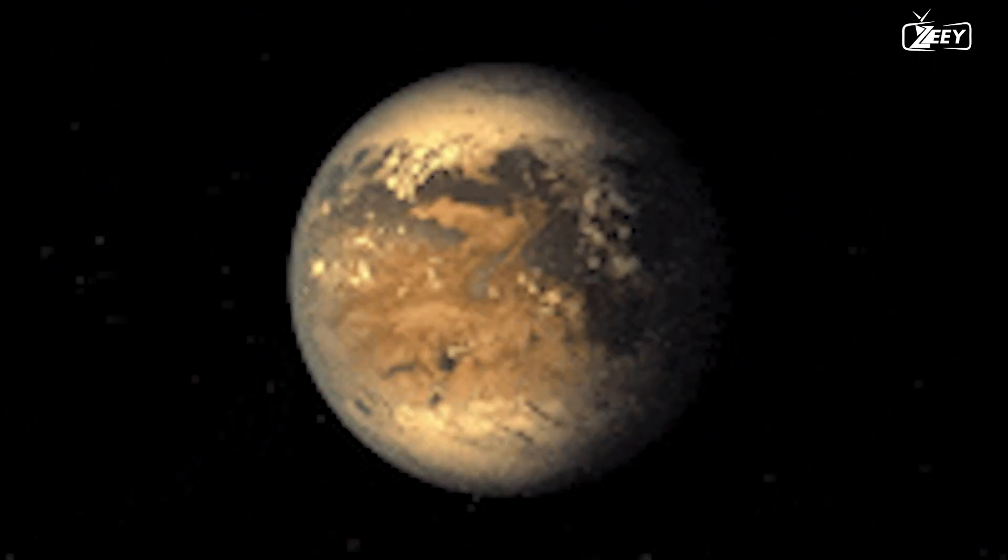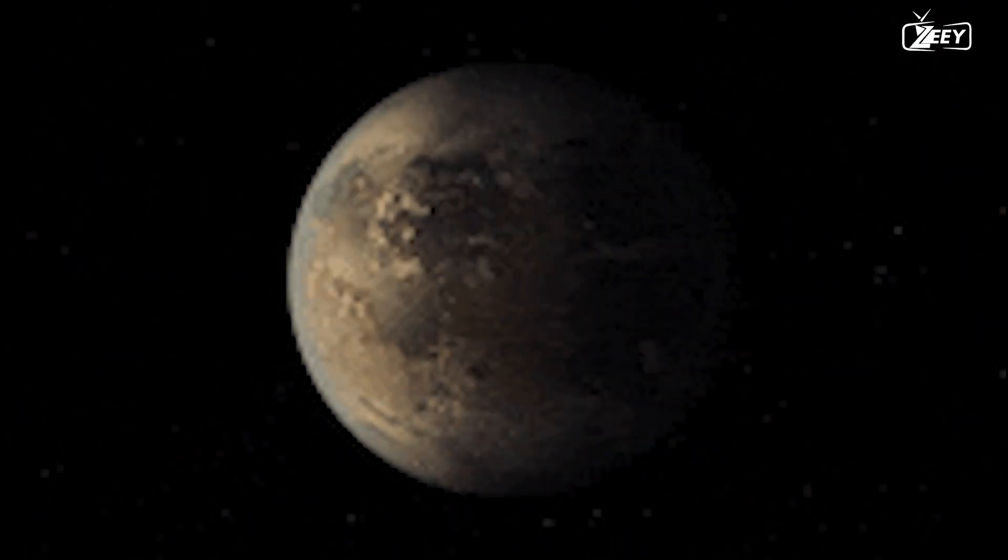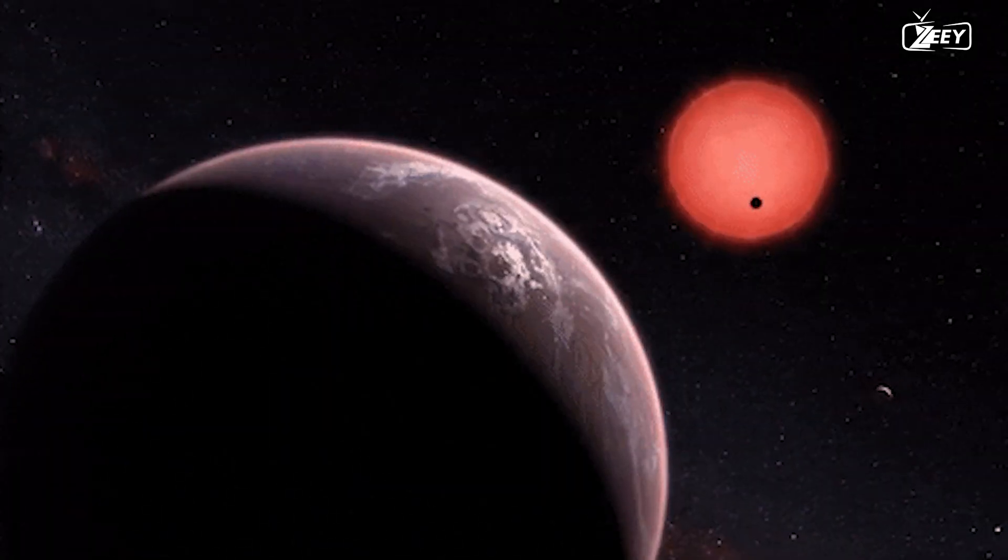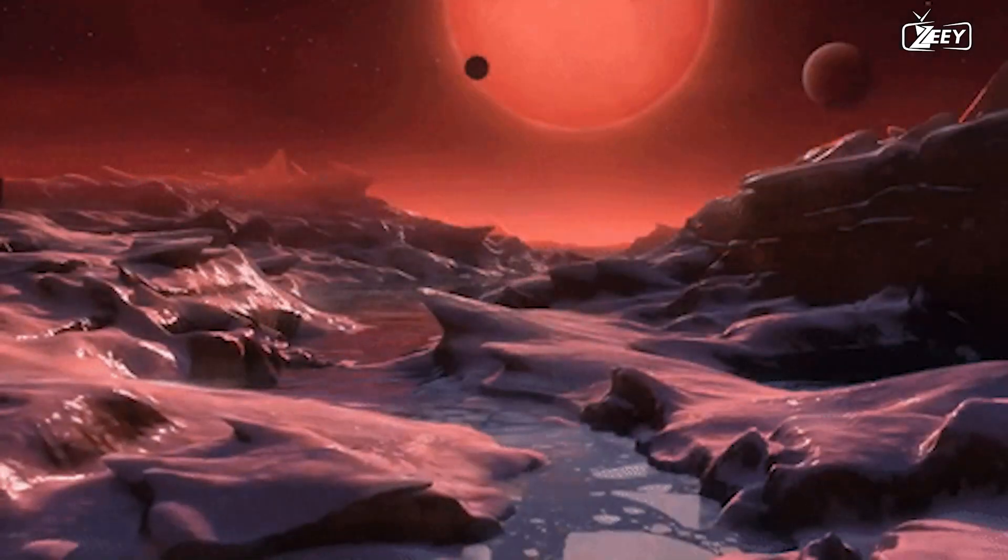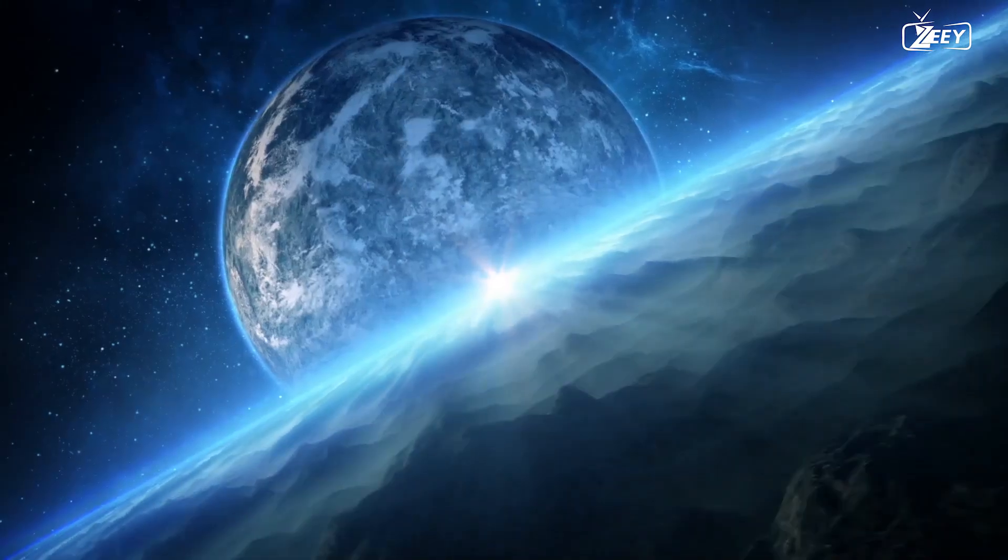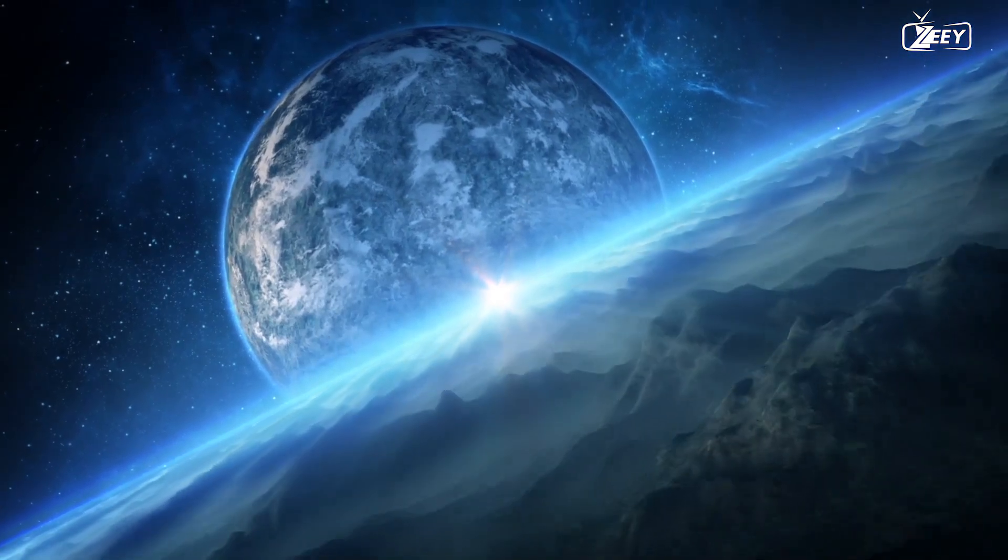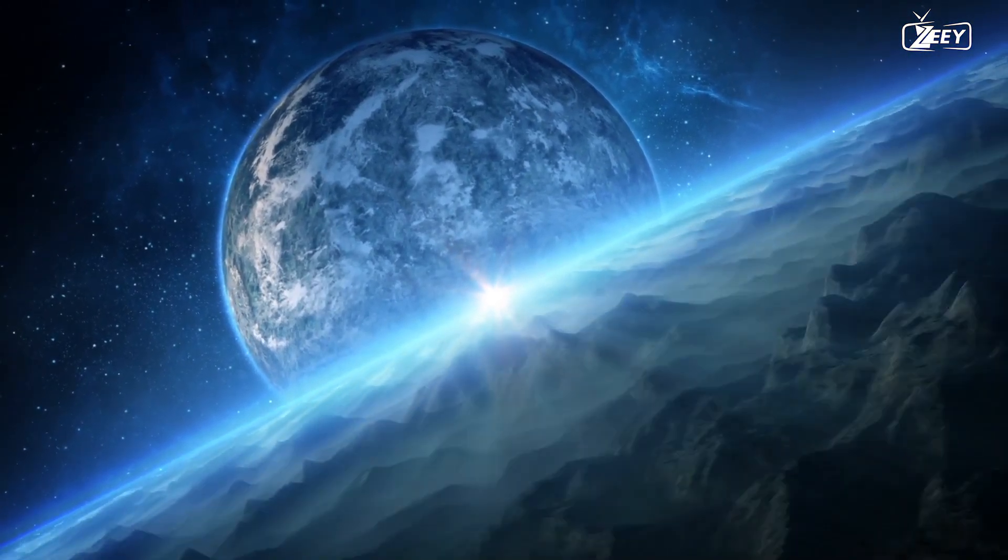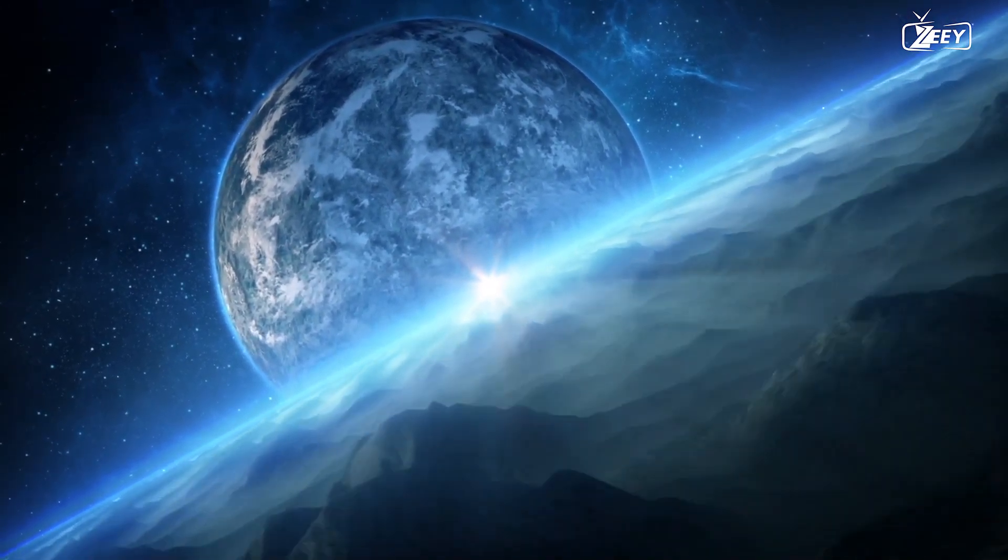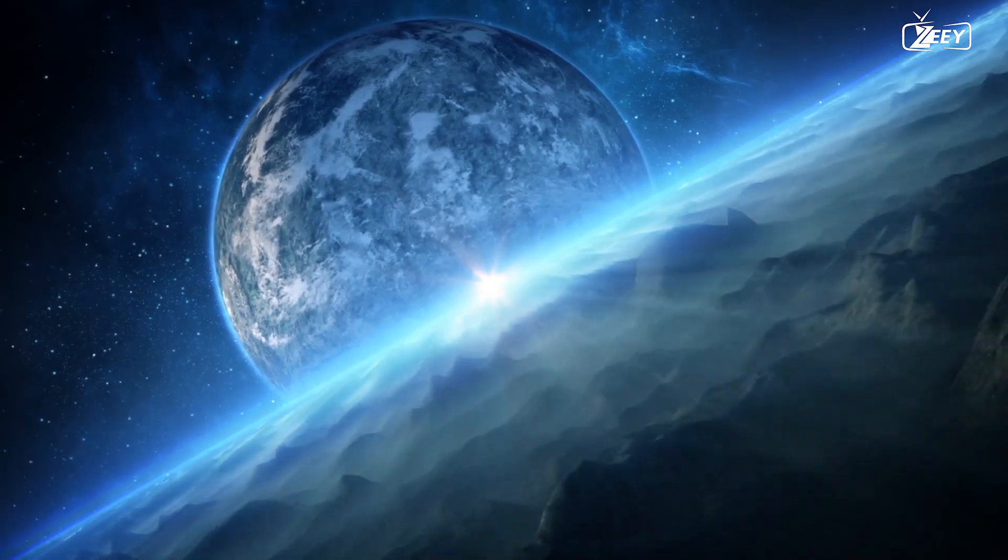Why is Kepler-22b so unique? It was the first planet whose location in a star's habitable zone had been independently verified. The orbital area of a star where an Earth-like planet may potentially have liquid water on its surface and support life is what is meant by this term.